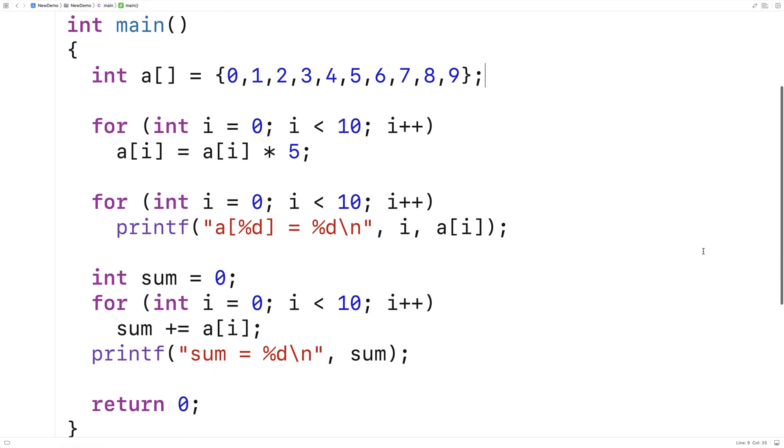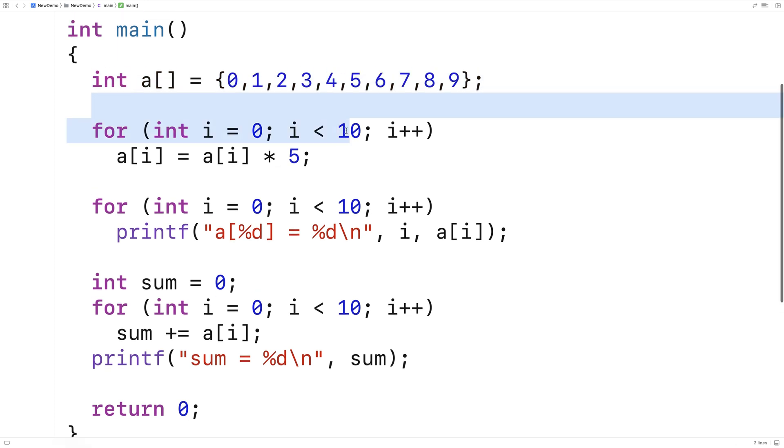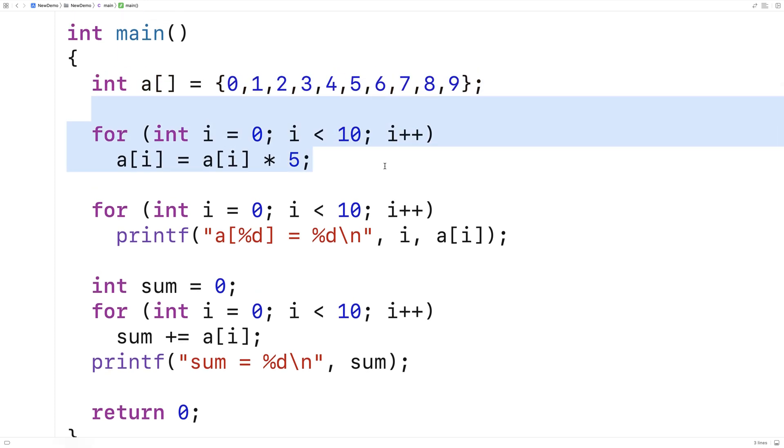Here we have an example program that's doing some work with an array. What it's doing doesn't really matter that much, but we'll go over it briefly. We're declaring an array with 10 elements in it, doing some work with those elements, multiplying them all by 5.